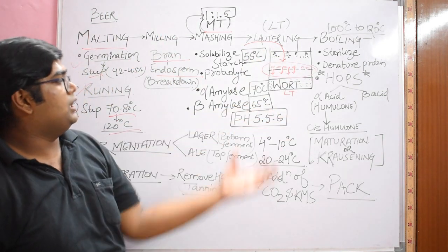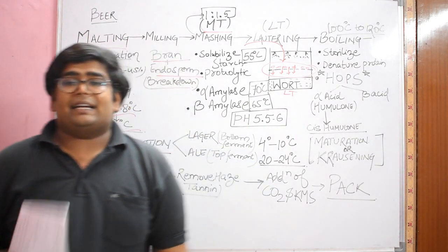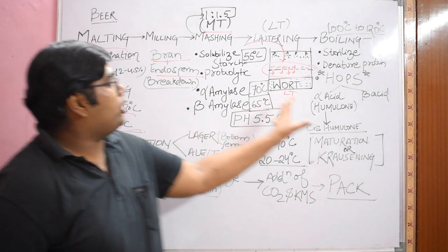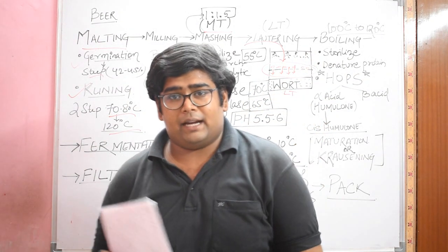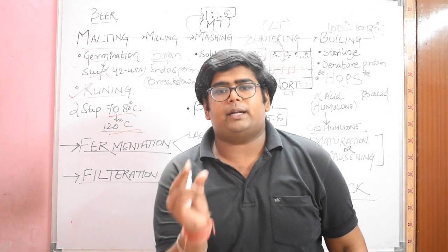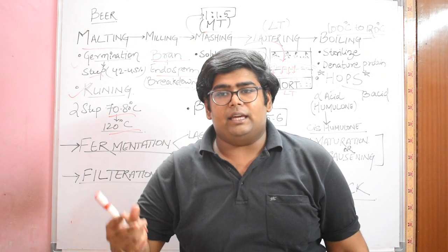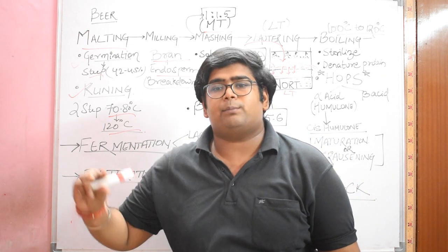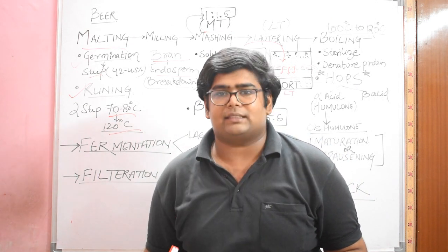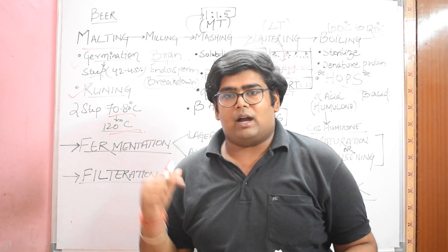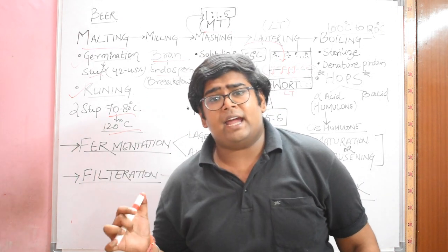This liquid which we have obtained after lottering is known as the wort. Now we will boil it. We have to fix a specific amount of fermentable sugars in our wort so that yeast will ferment it and produce alcohol, right? These are undistilled beverages, so we cannot add alcohol or spirit from above. Whatever alcohol is produced will come from this wort only, and we need to reach a specific alcohol amount.